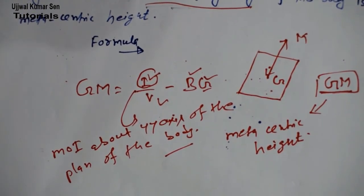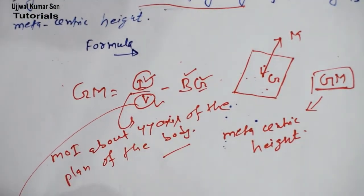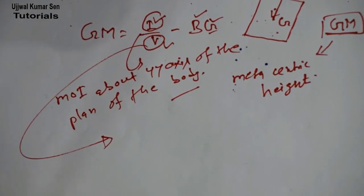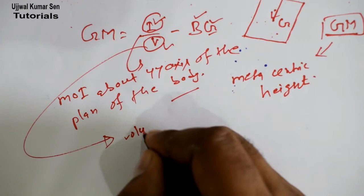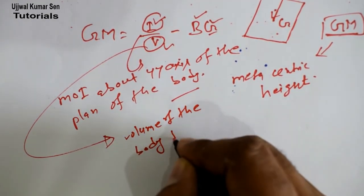I means moment of inertia MOI about YY axis of the plane of the body. Just note it down because this is going to help you a lot. Now V, what is V? You will say V is volume of the body. I will say you are wrong, because of course it's volume of the body but there is another thing you need to remember: volume of the body submerged in water.